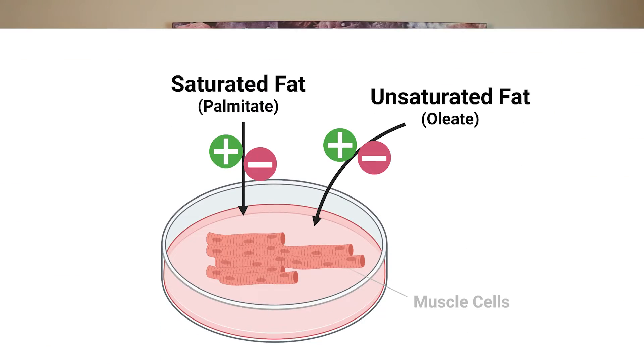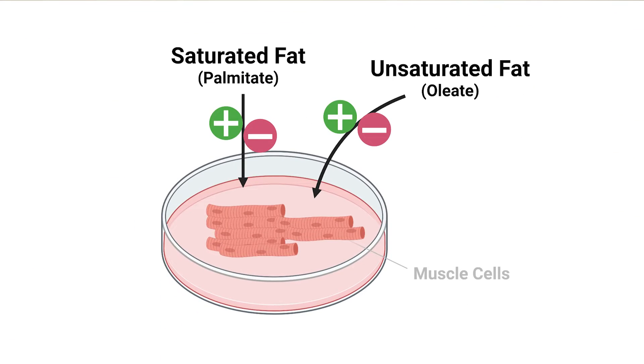On top of that, in the last video we discussed the viability of the muscle cells, meaning how well they survive when exposed to a substance — in this case, saturated fat, unsaturated fat, or a combination of the two. That said, let's see how unsaturated fats differ from saturated fats, if they do at all.